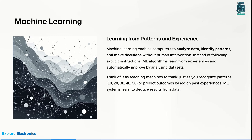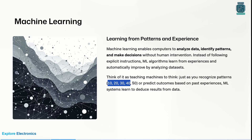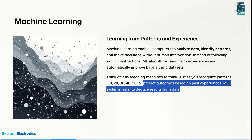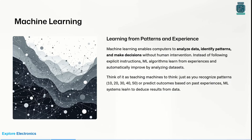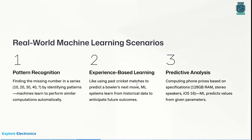Machine learning systems learn to recognize patterns — for example, 10, 20, 30, 40, 50 — or predict outcomes based on past experiences. Machine learning systems will learn to deduce results from the data. In real-world scenarios, we can take three examples: pattern recognition, experience-based learning, and predictive analysis.